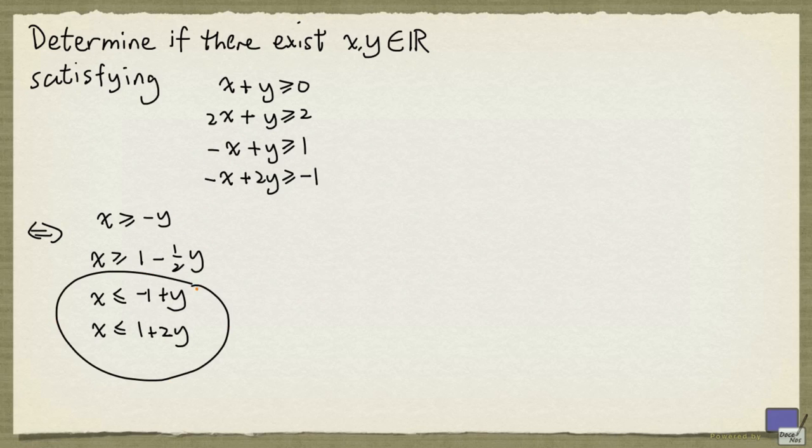So for these last two inequalities, I multiply both sides by minus 1 and then change the sense of the inequalities, and bring everything else to the right-hand side. So now, I have these as lower bounds on x, and these are upper bounds on x.